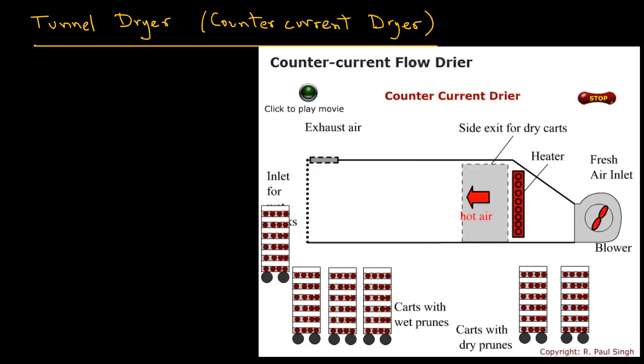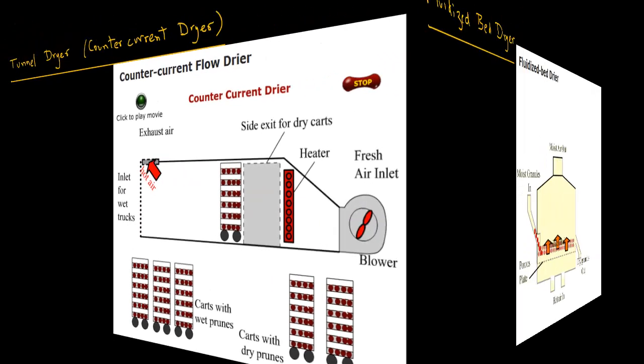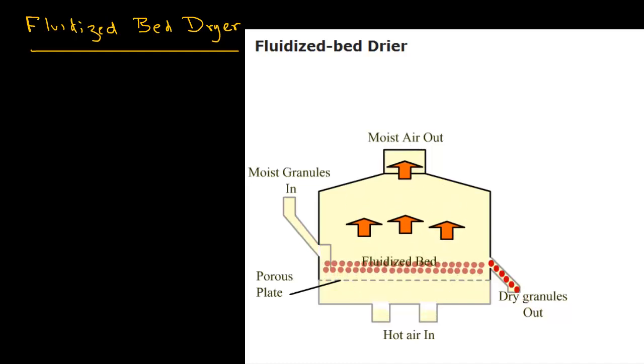Fluidized beds are often used when the solid foods are of smaller size and easier to fluidize. In this case, the food is placed on a porous plate so that air can be blown from underneath. The velocity of the air is such that the food particles are essentially lifted slightly from the porous plate during the drying process.